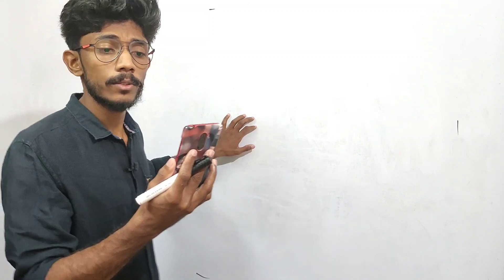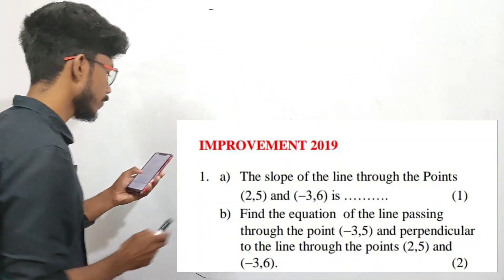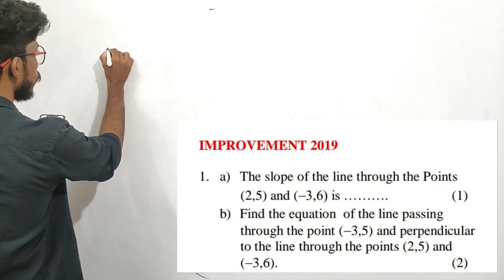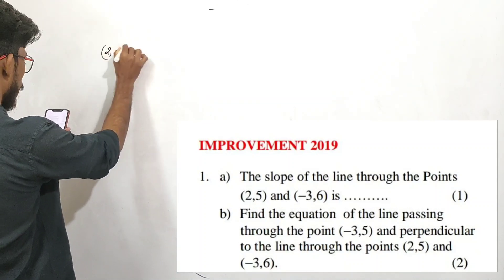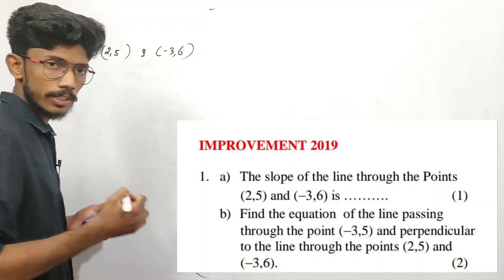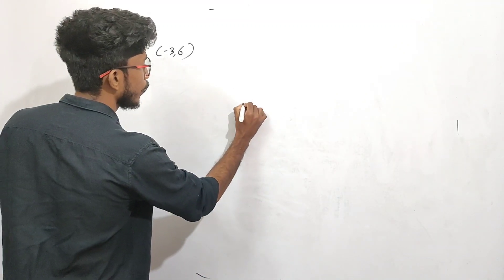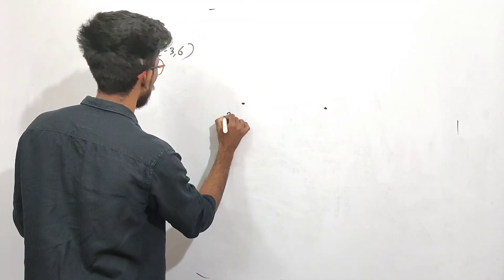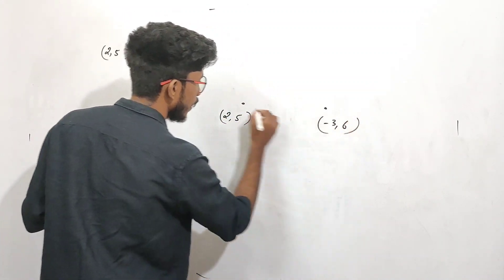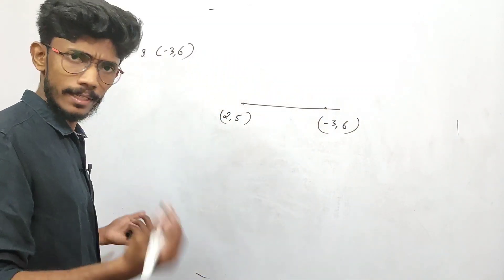Okay, now we'll start with the question. The slope of the line through the points (2,5) and (-3,-6). These are 2 points: (2,5) and (-3,-6). We'll find the slope of the line through these two points.